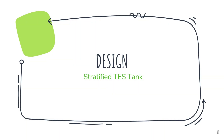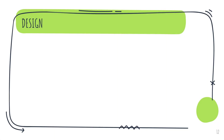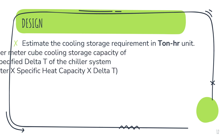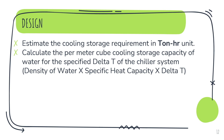Let us now go through the TES tank design process. As the preliminary step, the cooling storage requirement in the ton-hour unit is estimated. The ton-hour unit for cooling storage is similar to the kilowatt hour for electrical power storage. It is estimated based on the cooling load requirement in the district cooling network for a predetermined period. Then the per meter cube cooling storage capacity of water for the specified delta T of the chiller system will be calculated, which is equal to density of water multiplied by specific heat capacity of water multiplied by delta T of the chiller system.